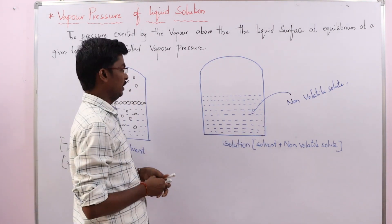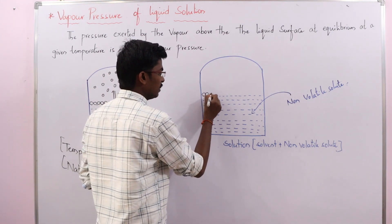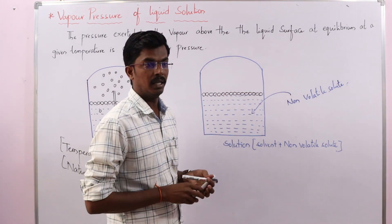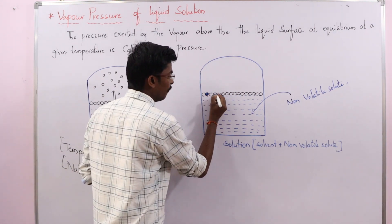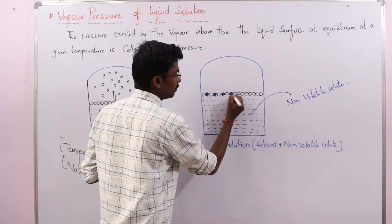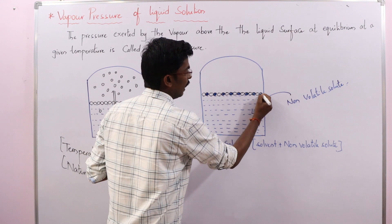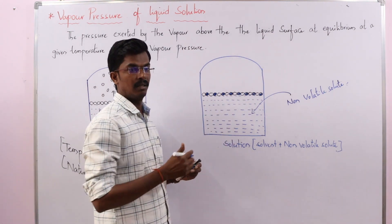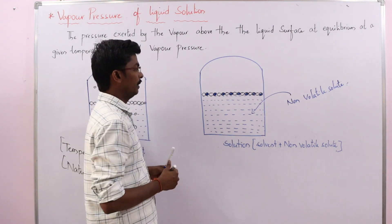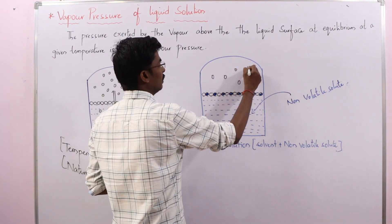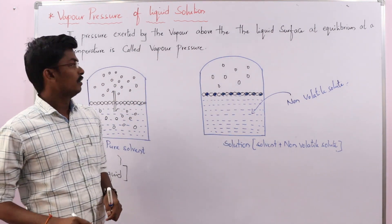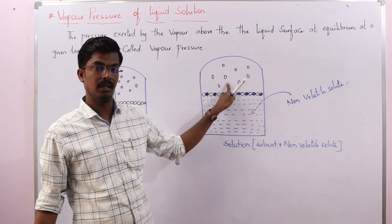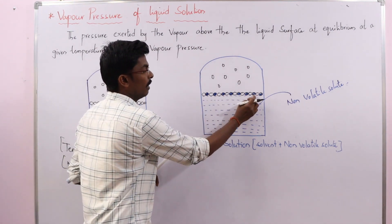But when you add a non-volatile solute to the volatile solvent, the surface becomes occupied with some solute particles. As a result, the number of solvent particles on the surface decreases. When the number of solvent particles decreases, the number of particles escaping from the liquid also decreases. So we have more vapour particles for the pure solvent, but fewer vapour particles for the solution, because the surface is occupied with non-volatile solute.